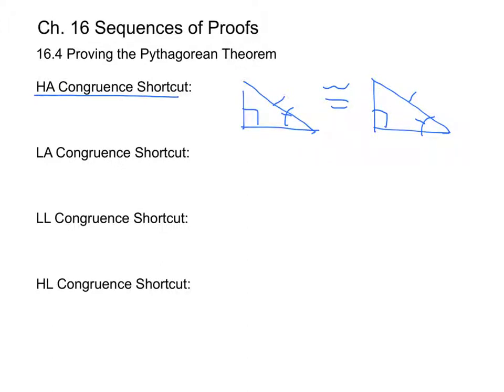Then we have the LA congruence shortcut, which says that if one leg and an acute angle of a right triangle are congruent to the corresponding leg and acute angle of a second right triangle, then the two right triangles are congruent.